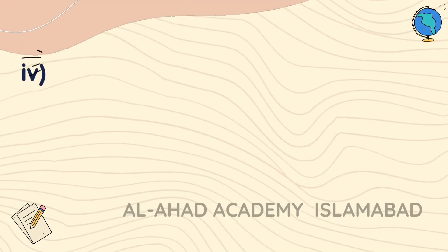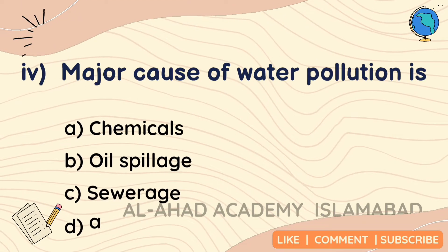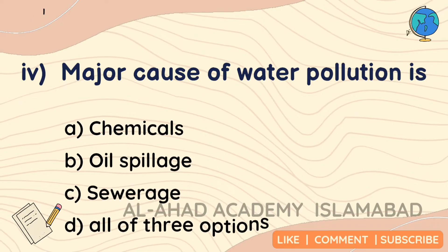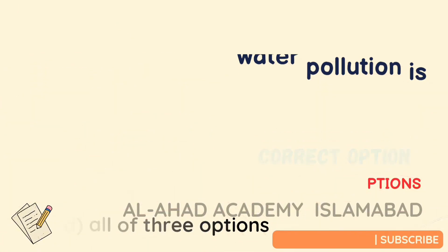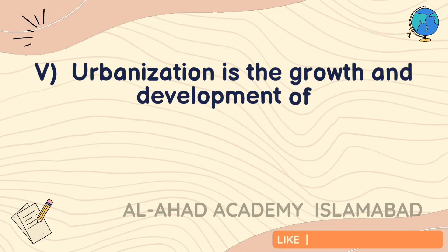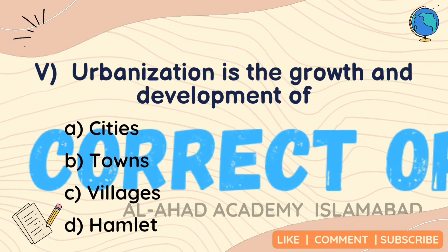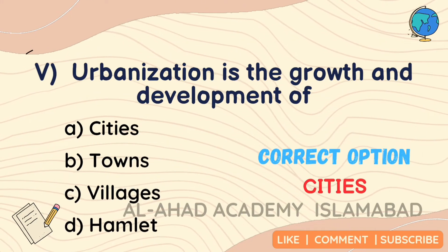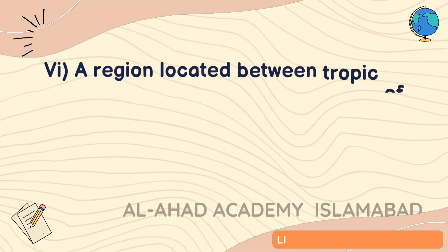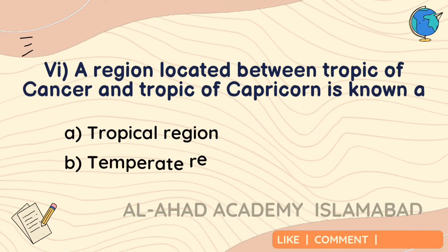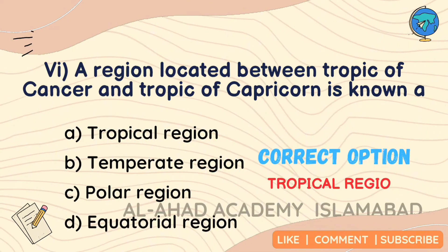The major cause of water pollution is all of the three options. Urbanization is the growth and development of cities. A region located between the Tropic of Cancer and the Tropic of Capricorn is known as a tropical region.